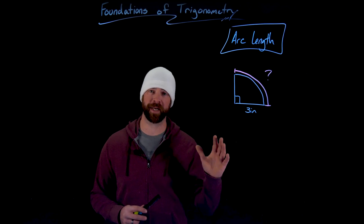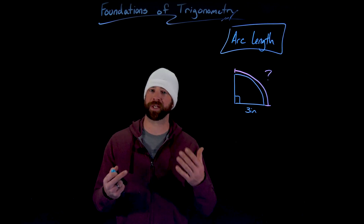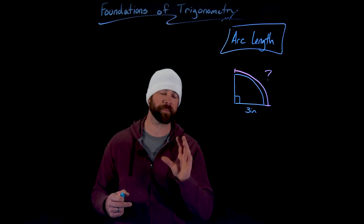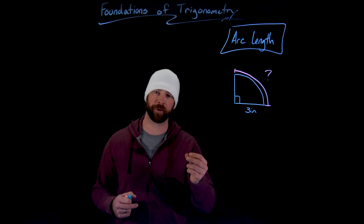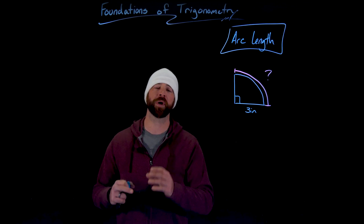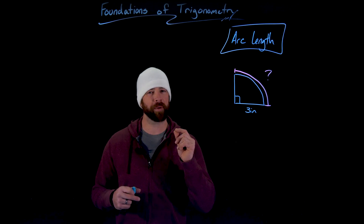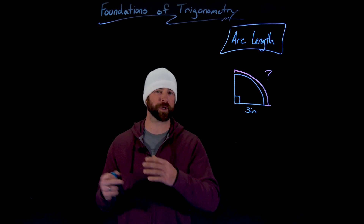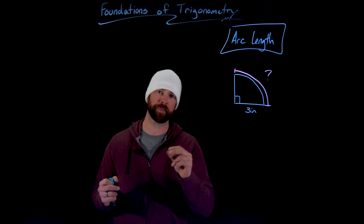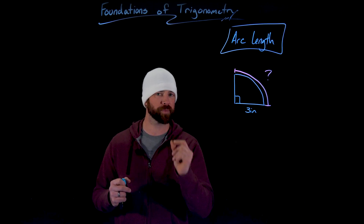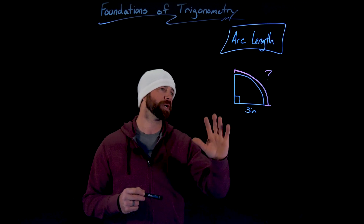Beautifully, for finding arc lengths of circular sectors, we have formulas that do that. But I want to make sure why we have those formulas is very clear, and then show you how beautifully it works for radians — which will start to illuminate why we use radians often in trigonometry instead of degrees.